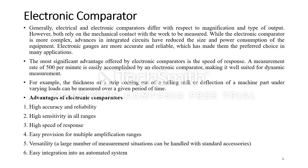The advantages of the electronic comparators are: high accuracy and reliability, high sensitivity in all ranges, high speed of response, and easy provision for multiple amplification ranges — hence versatility. This comparator can be used for any measuring device. Let me clearly tell you that electronic comparators are mostly electronic gauges. Using this gauge, we can fix it to any type of measuring device, which is the main difference between the gauge and the entire measuring device. Moreover, these electronic comparators can be easily integrated into an automation system.